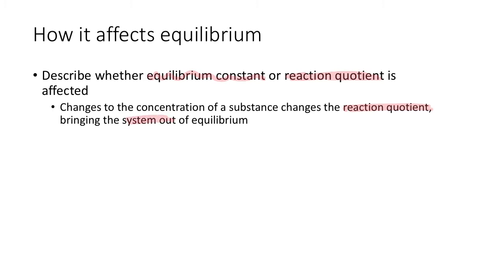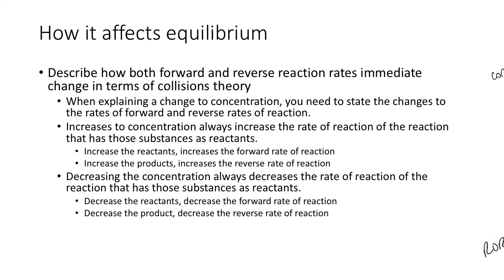The system is no longer in equilibrium, which means one of the reactions is going to go faster than the other for a little while. When explaining a change in concentration, you need to state the changes to the rates of both the forward and reverse reactions — not just to the one that changes.